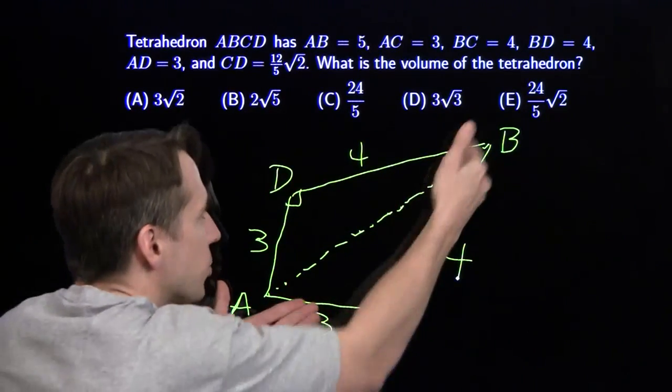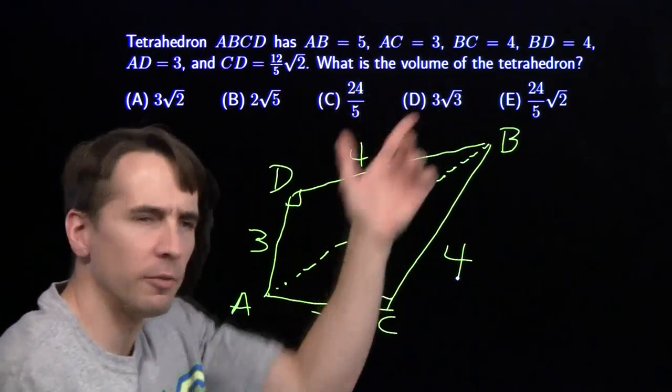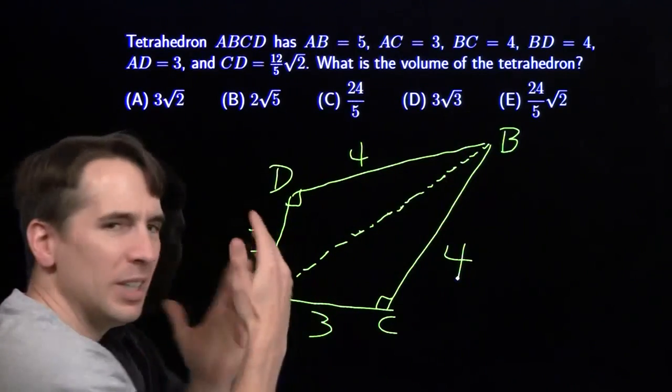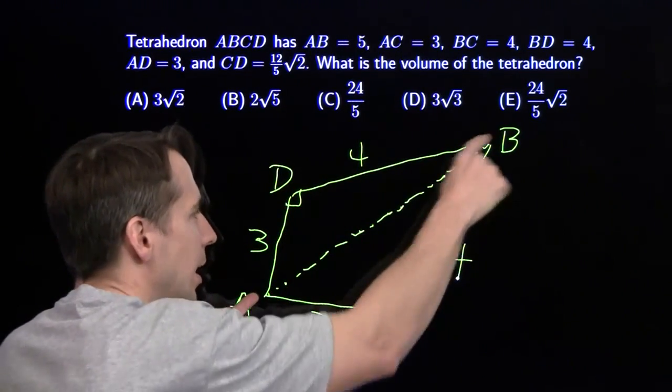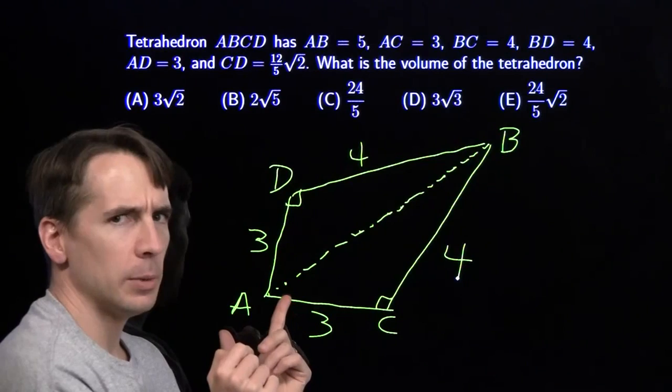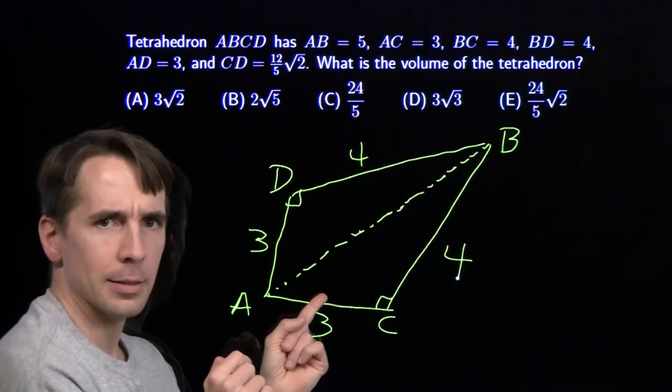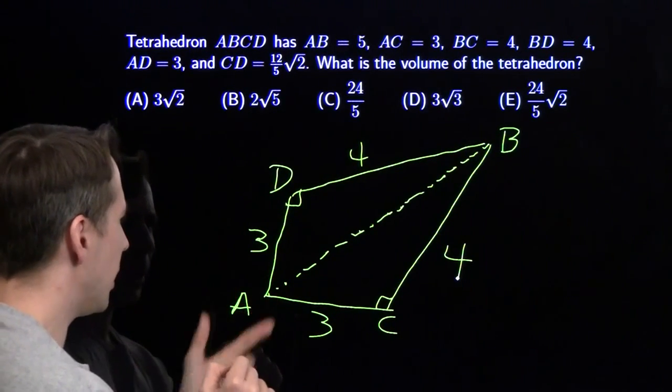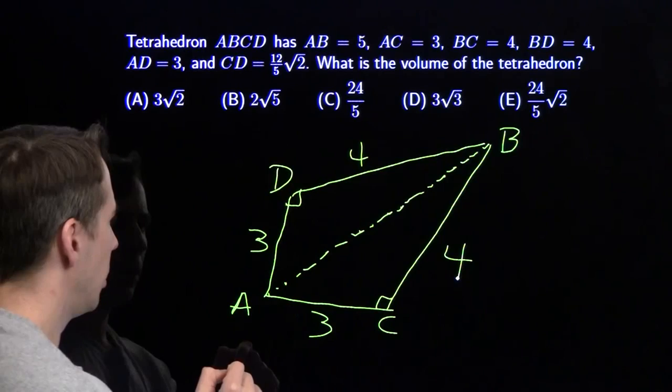Now, I've got the area of the base right away. We need the base for the volume of the tetrahedron. Then, all we need to do is find the altitude from D down to the face ABC. We have no idea where that thing lands. So how are we going to think about that altitude?